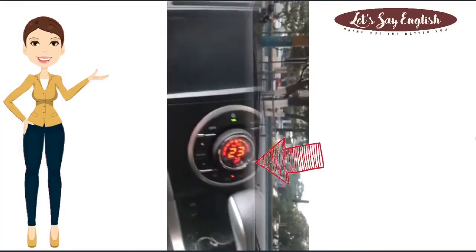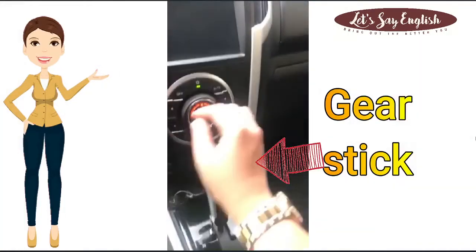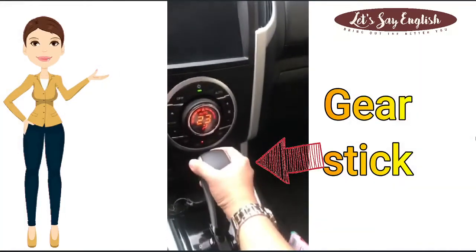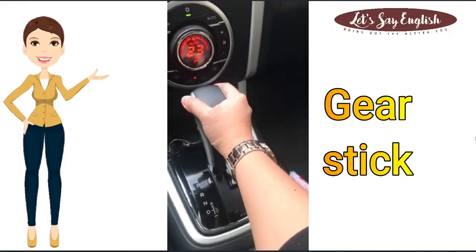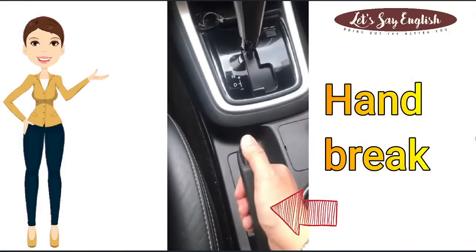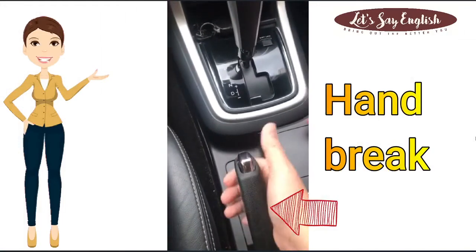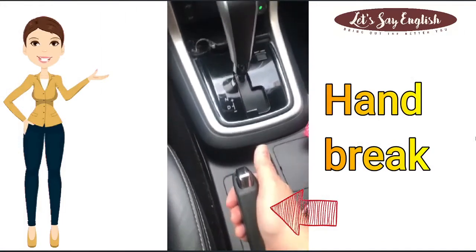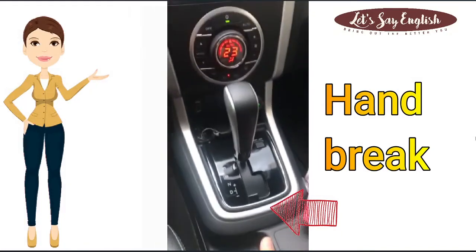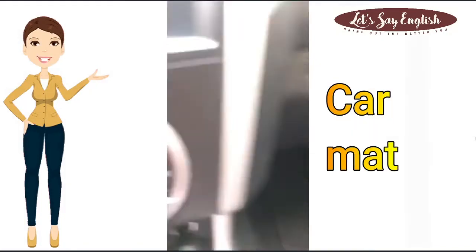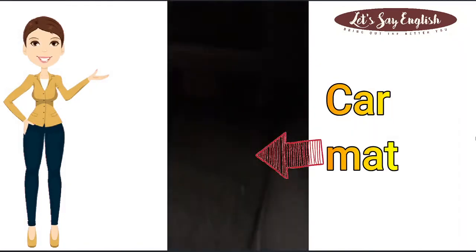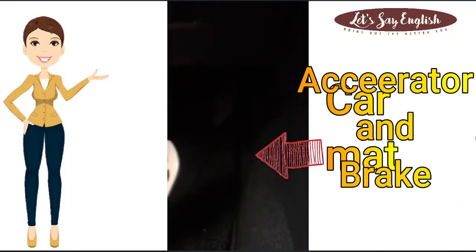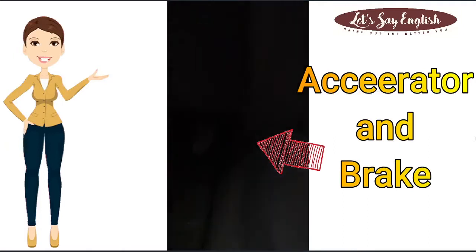This long stick here is the gear stick, and next to it is the handbrake. At the bottom of the car you'll be able to find the car mats, as well as the accelerator and the brake.